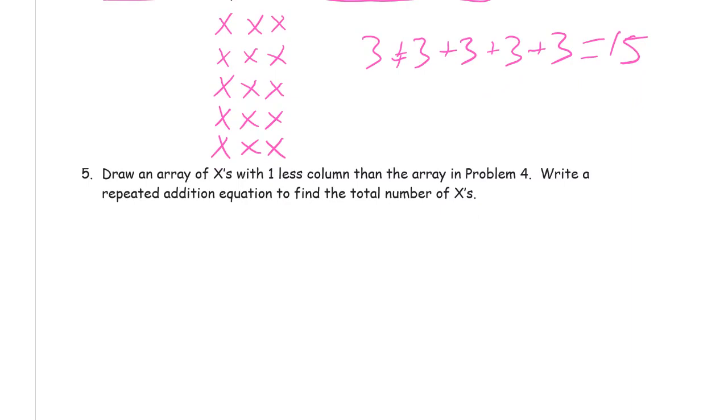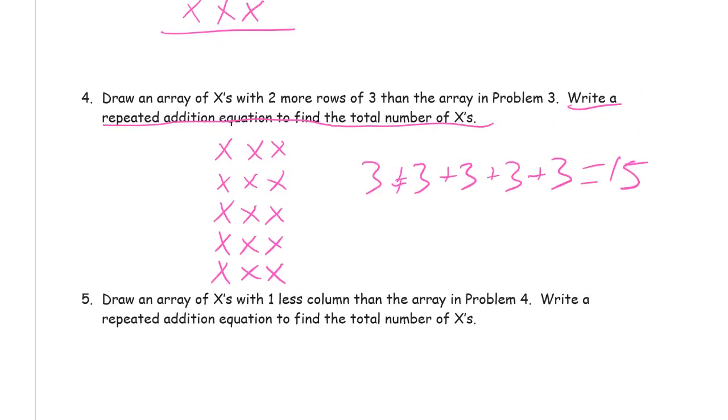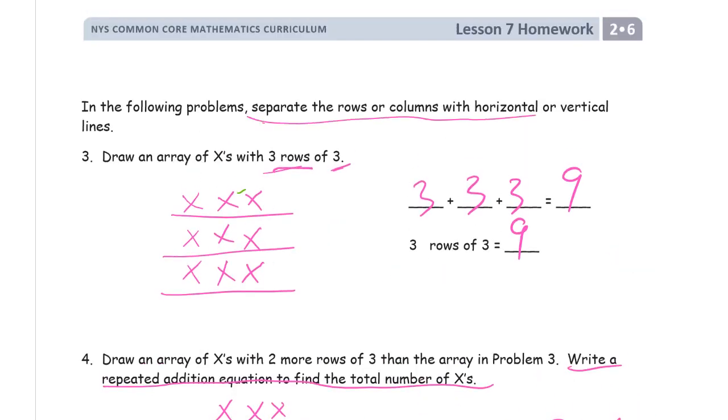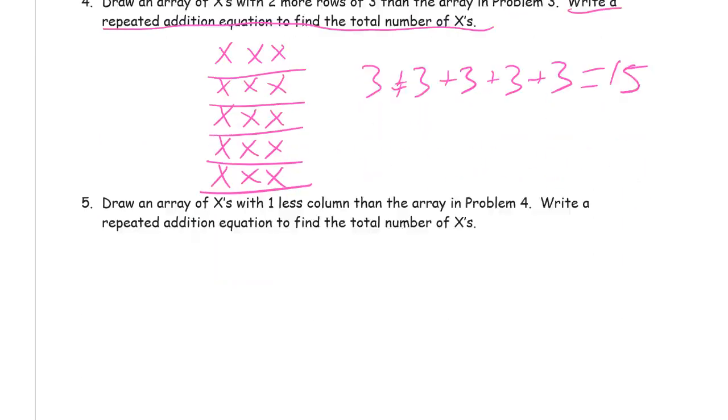Draw an array of X's with oh and this says rows. So I have to don't forget the horizontal lines. Right? Because it's set up here. Separate rows or columns with horizontal or vertical lines. Okay.